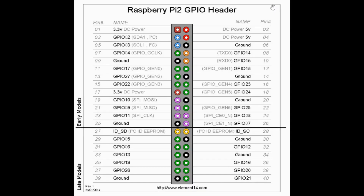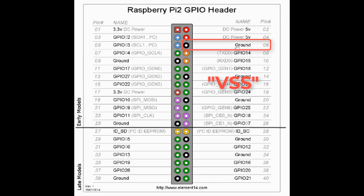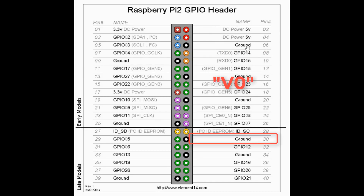Okay guys, this is our Raspberry Pi pin connection diagram. When I connect, I use this as reference. I'm going to connect the fan on pin number four and pin number six. Then on here I'm going to connect pin number two of the LCD, and this one I'm going to connect pin number one of the LCD, which is VSS.